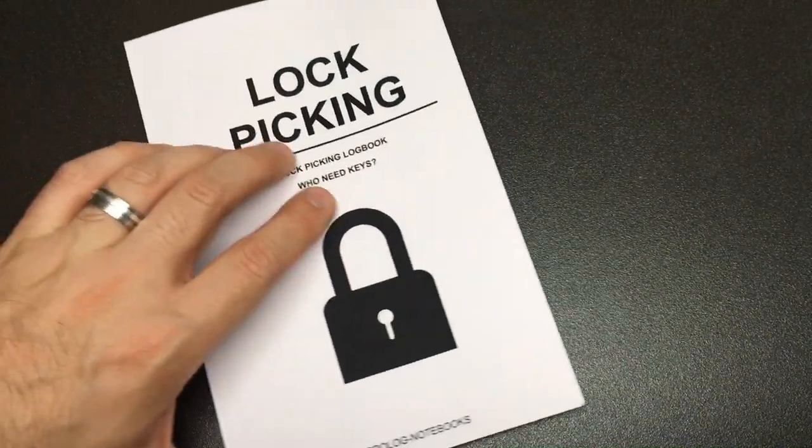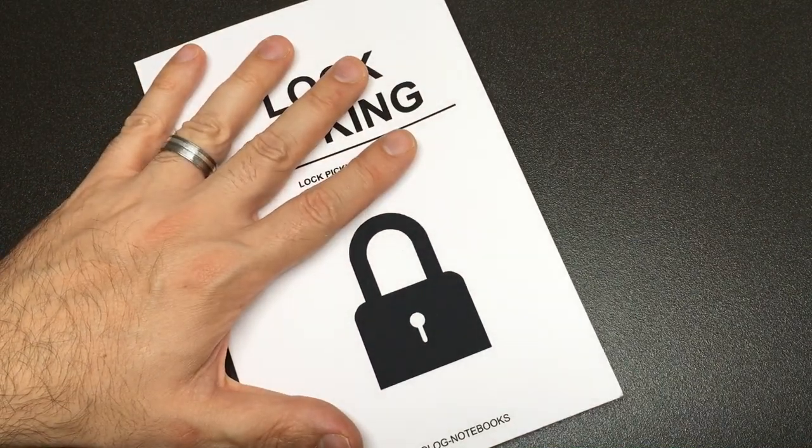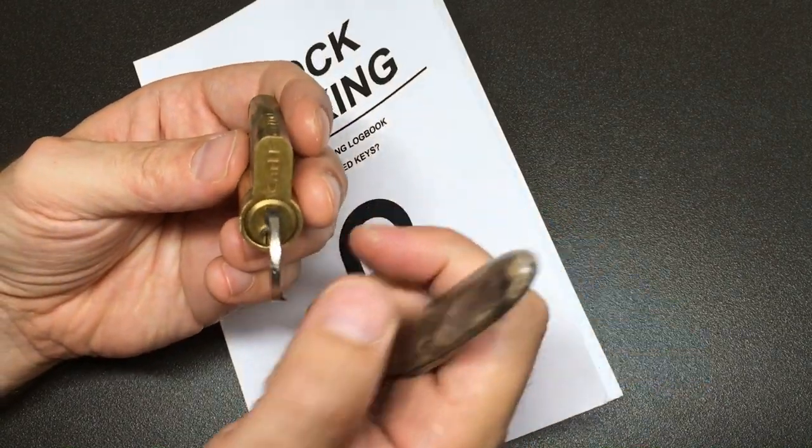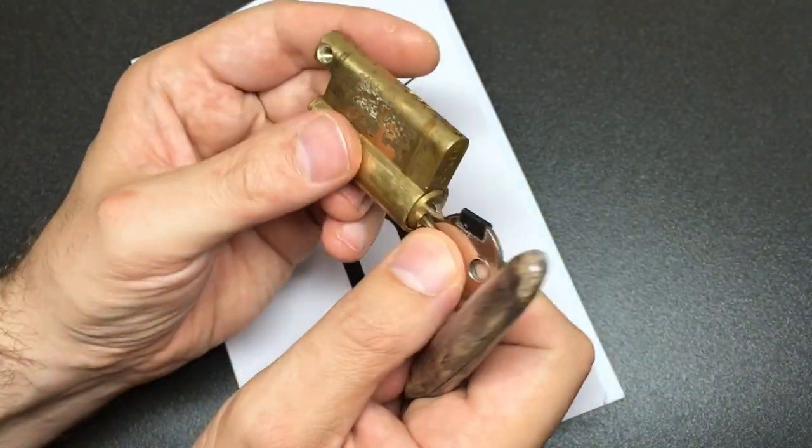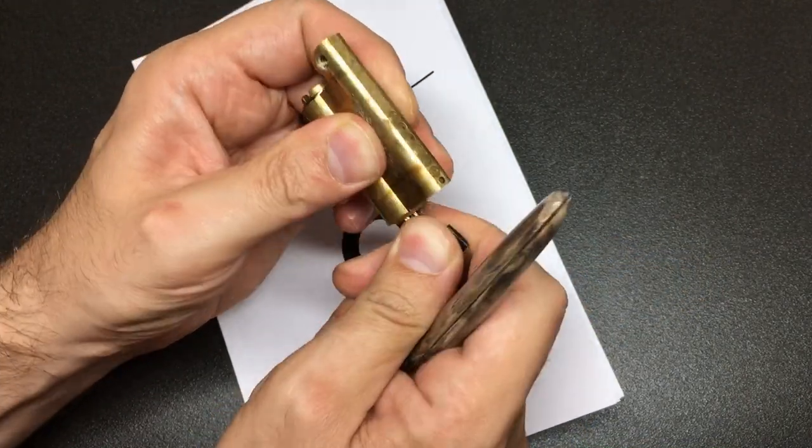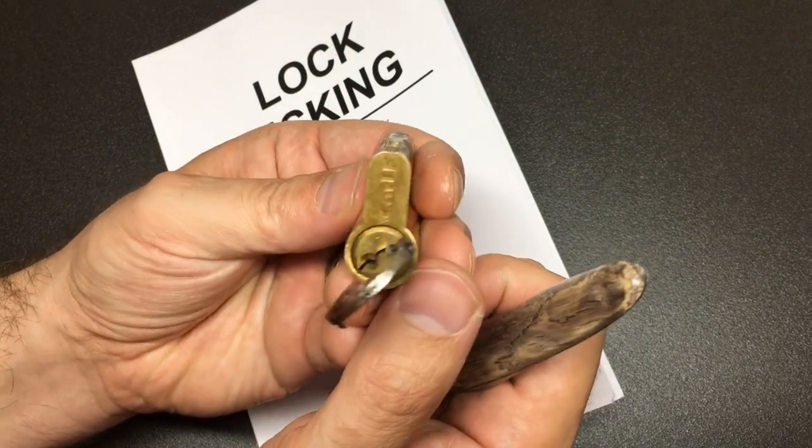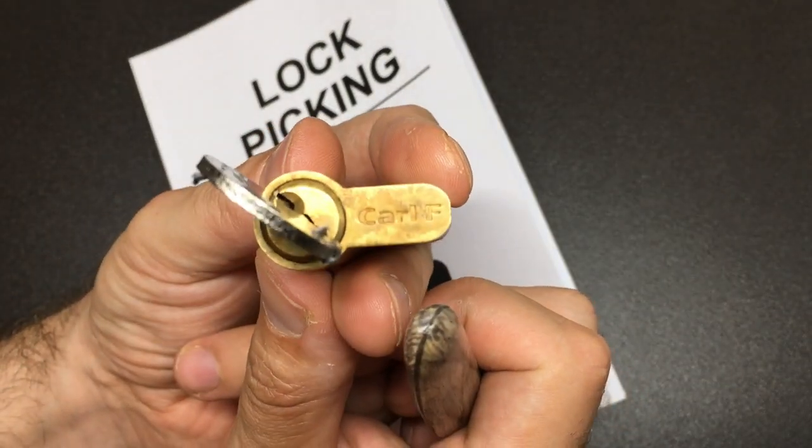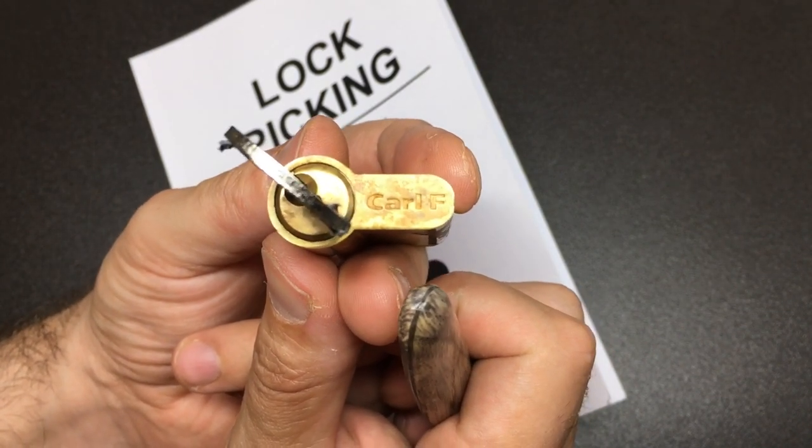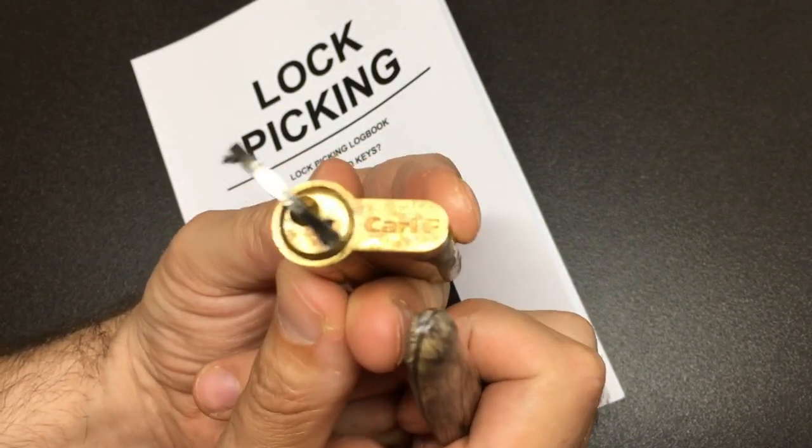Not only did Tom send me this very nice little notebook, he also sent along some other little extras. A Carl F Euro cylinder which was giving him some trouble, which he picked but said there was some really deep spools. And oh wow, is there? In fact, I will do a video on this lock. If any of you don't know the brand, I don't blame you. I have heard of it because it's a relatively generic lock you can find in the UK, but surprisingly difficult picks genuinely.